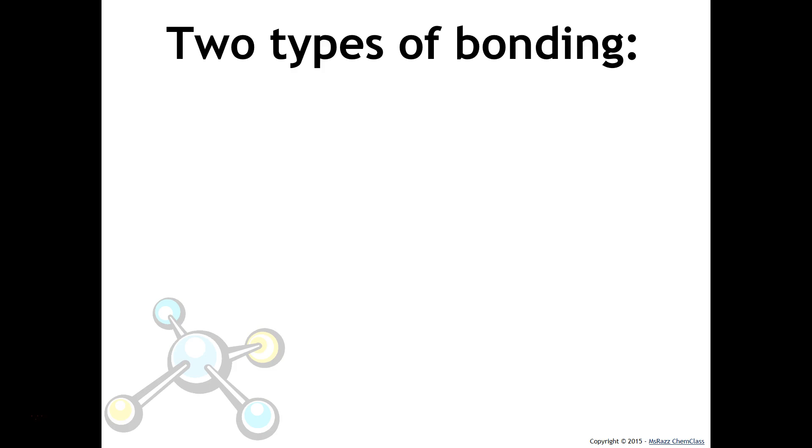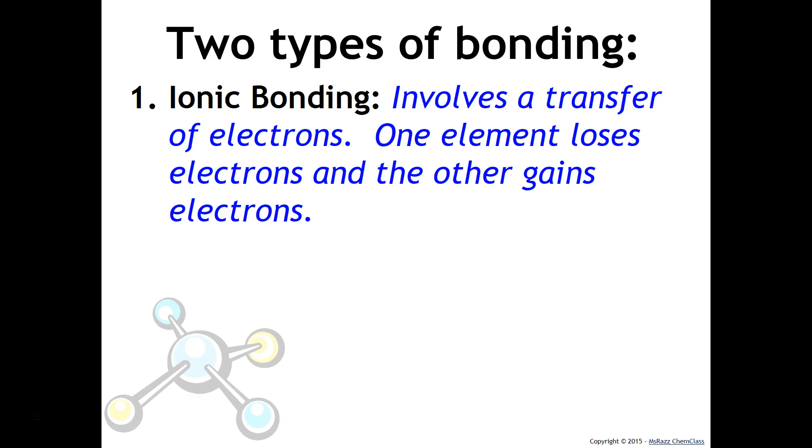There are two major types of bonding that we will discuss in this class. The first one is ionic bonding. Ionic bonding involves a transfer of electrons. One element will lose electrons, and the other one will gain those electrons.